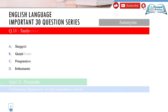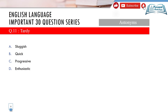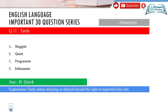Now we move to antonyms. Question 11: the word is 'tardy.' Options: A) sluggish, B) quick, C) progressive, D) enthusiastic. Tardy means delayed or late beyond the expected time. The antonym is option B — quick — since it is the opposite of being delayed.